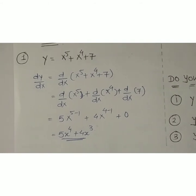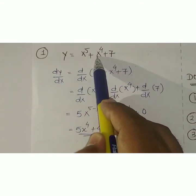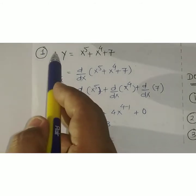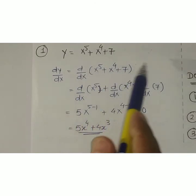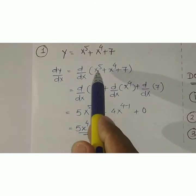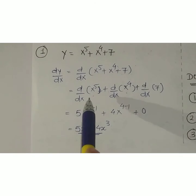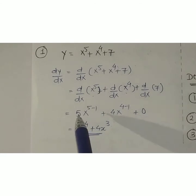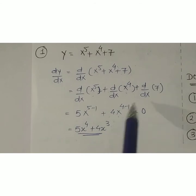Now let us take an example. Suppose y = x⁵ + x⁴ + 7. I have to differentiate y, so it will be dy by dx. Put d by dx over the whole expression in brackets. Since there is plus between terms, differentiate each term separately: first, second, and third. For x⁵, apply the x raised to n rule — power comes down, x raised to (n−1) — so 5 minus 1. Similarly for x⁴. And 7 is a constant, so its answer is 0.